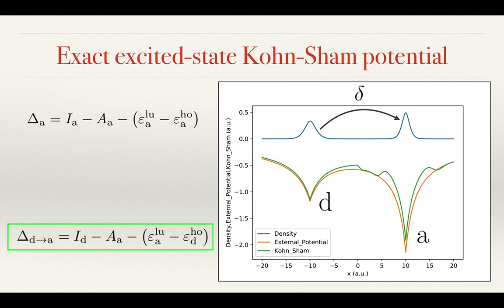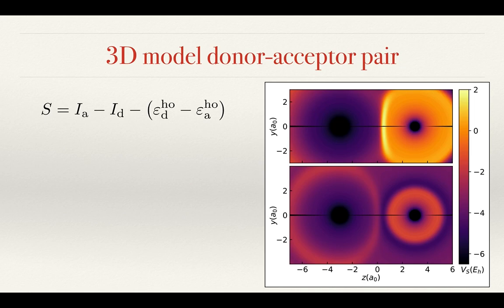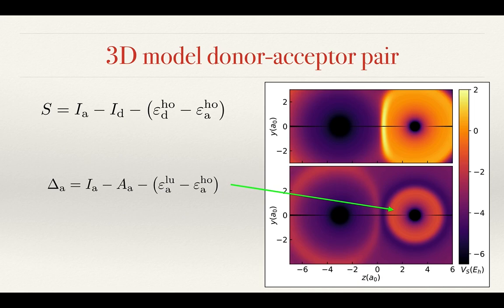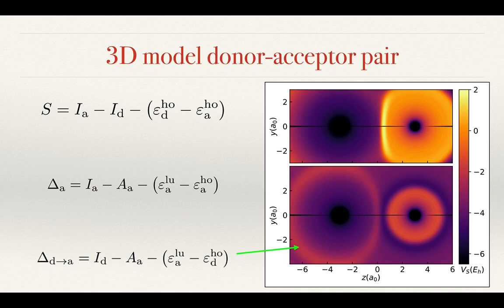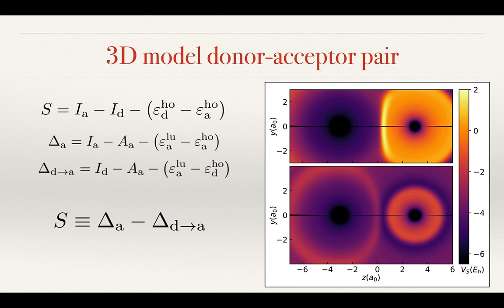Let us now look at the same type of system, but for a realistic molecule in 3D. The top panel shows the ground-state Kohn-Sham potential for a lithium-beryllium ion. In this case, we see a platform around the right atom, which creates the step S between the atoms. Once charge is added to the right atom, in the bottom panel, we see a platform around the acceptor atom, which is the derivative discontinuity of that atom, and a halo around the left atom, which corresponds to the charge transfer derivative discontinuity — the same as observed in our 1D model. Both of the steps which occur between the atoms sum to give the interatomic step height seen for the ground state, showing the close relationship between these quantities and resolving the paradoxical conclusion from before.